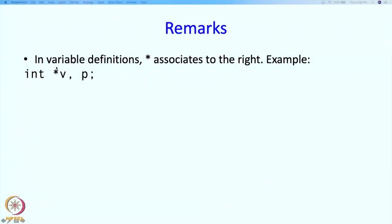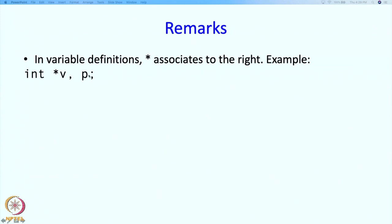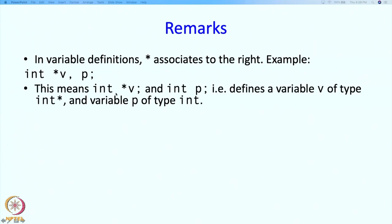C++ says that * binds to the variable name, not to the type. So int* v, p is treated as int* v and int p — not int* v and int* p. Because this star sort of binds to v and not to int. This is perhaps slightly unfortunate, but that is how C++ defines it.